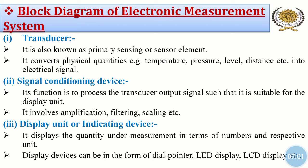The second block is the signal conditioning device. Its function is to process the transducer output signal such that it is suitable for the display unit. This signal conditioning device involves amplification, filtering, scaling, etc.